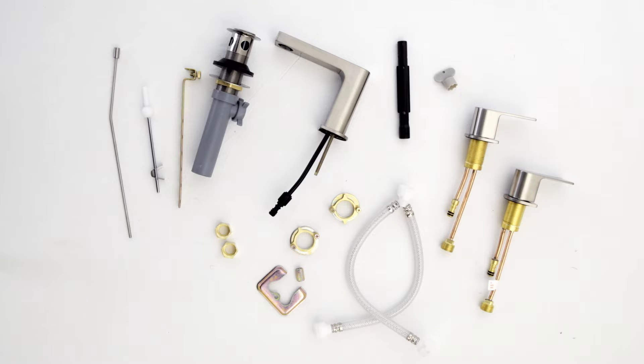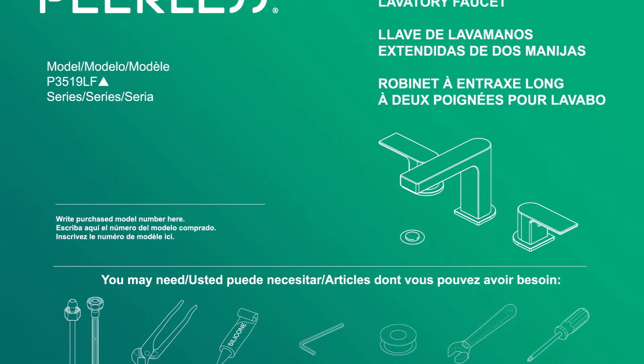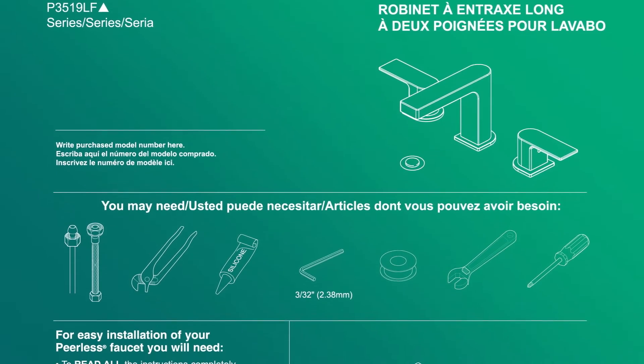Each model comes with different assembly parts, but for this model you will find the faucet, valves, pop-up drain and pieces, lift rod, mounting bracket and nut, nut wrench, and aerator removal tool. Be sure to read all of the printed instructions found in the box.